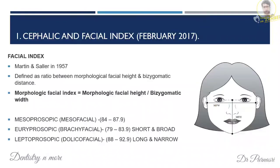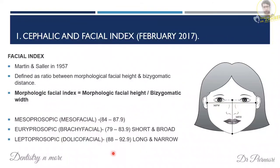The facial index, also given by Martin and Saller, is calculated using morphological facial height — from nasion to menton — divided by the bizygomatic width. Based on this, there are three facial types: mesoprosopic (average face), euryprosopic or brachyfacial (short, broad face), and leptoprosopic or dolichofacial (long, narrow face). You must write the values indicating the ratio for each face type.